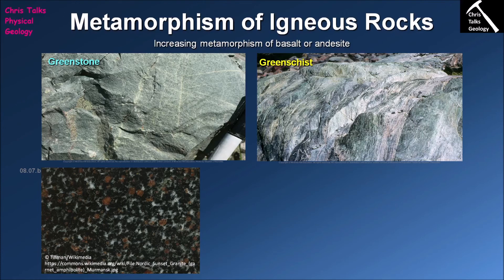When pyroxene and olivine break down they form three distinct minerals: chlorite, epidote, and actinolite. The interesting thing about these three minerals is they are all green in color. At low to medium metamorphic grades, our basalt will metamorphose to give us a type of rock referred to as a greenstone, because of its very distinctive green-gray color. If our greenstone takes on a foliation — because chlorite is a platy mineral and actinolite is an elongate mineral — we refer to it as a greenschist.